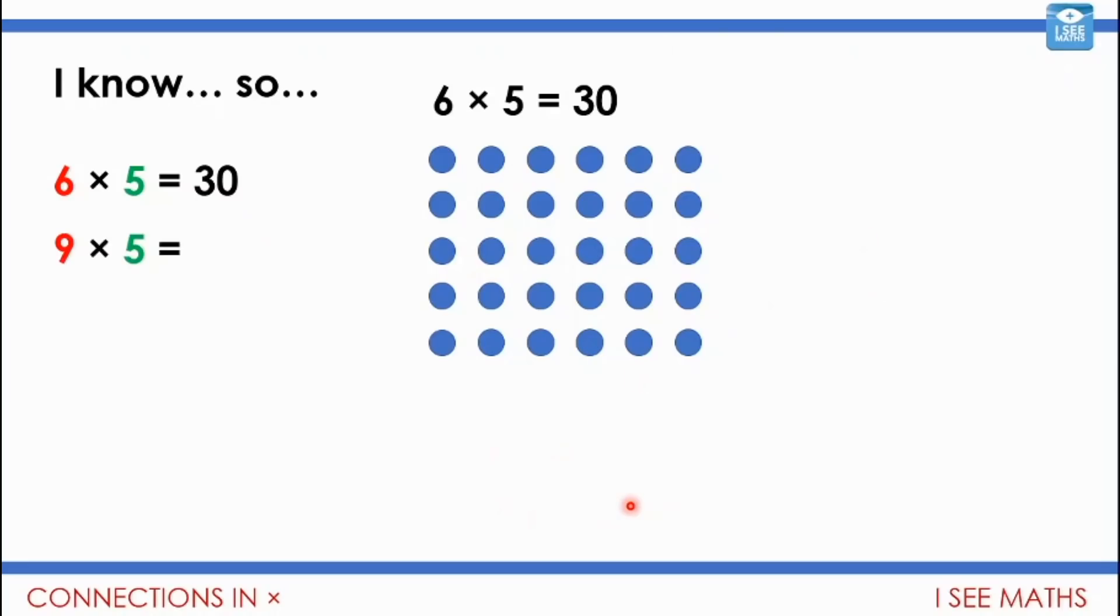So now nine times five. I'm going to change the image from being six lots of five to nine lots of five. How's it going to change? What's the link between six fives and nine fives? Pause the video. What do you think?